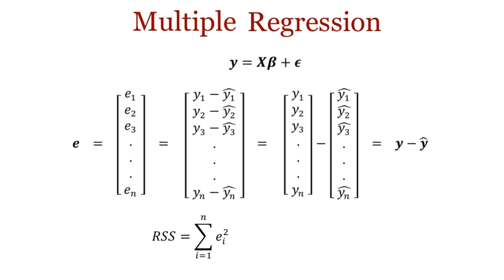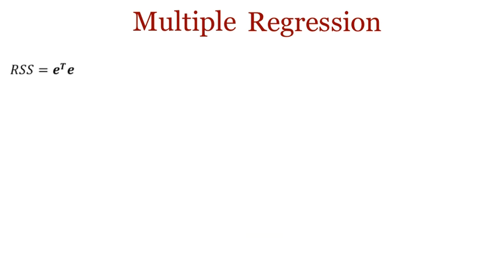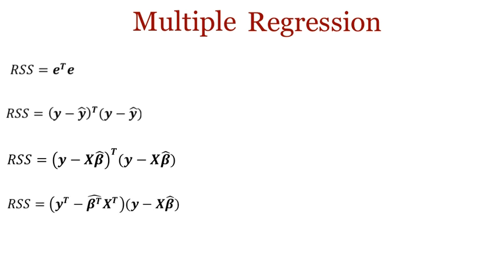The residual sum of squares can be rewritten as a product of E transpose times E. We now replace E with y minus y-hat, and then y-hat with x-beta-hat. We can then expand the matrix transpose. Remember that AB transpose is B transpose times A transpose. We multiply the terms to get rid of the brackets. As with the least squares method for scalar values, the goal is to find the value of beta that minimizes this RSS.